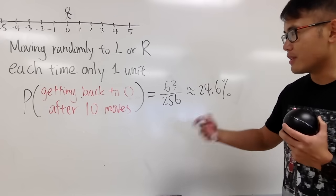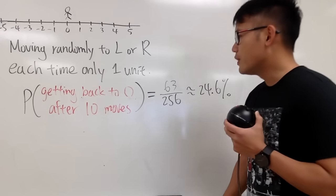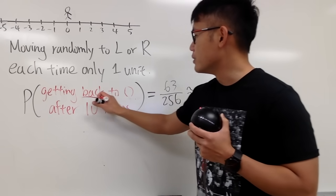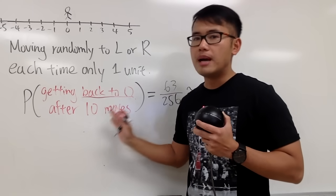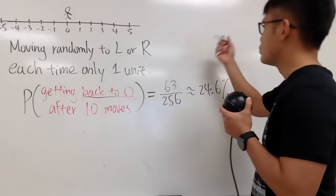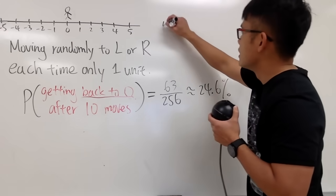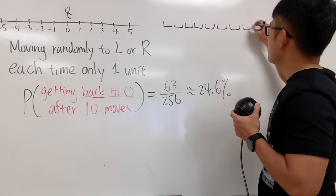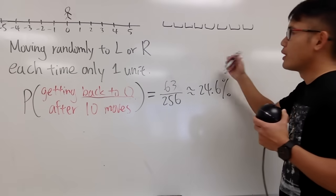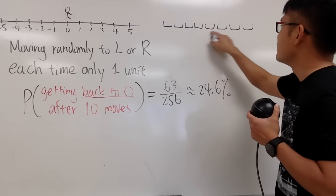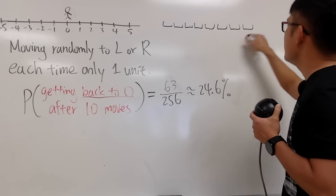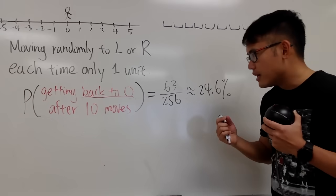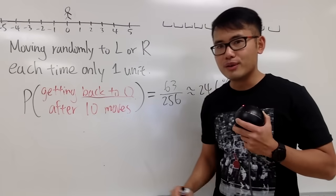We have to think about this from the component point of view. We need to think about how we can go back to 0 after 10 moves. Suppose we have 10 slots — each one represents either left or right: 1, 2, 3, 4, 5, 6, 7, 8, 9, 10. We just have to think about how we can really go back to 0.